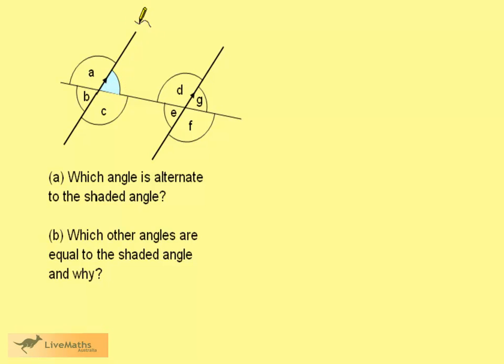Alternate angles involve Z shapes. Both parallel lines must be involved with the Z. We can see that E is alternate to the shaded angle.